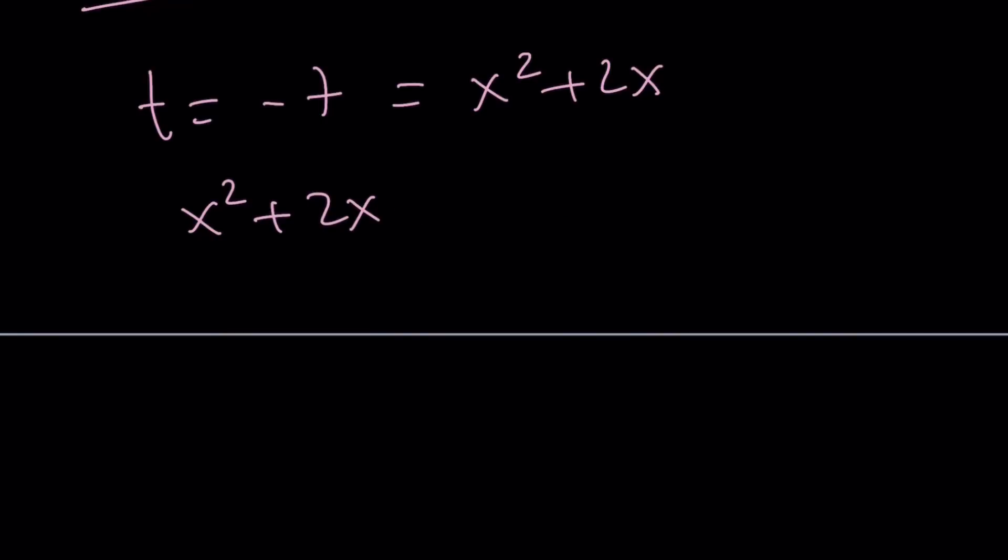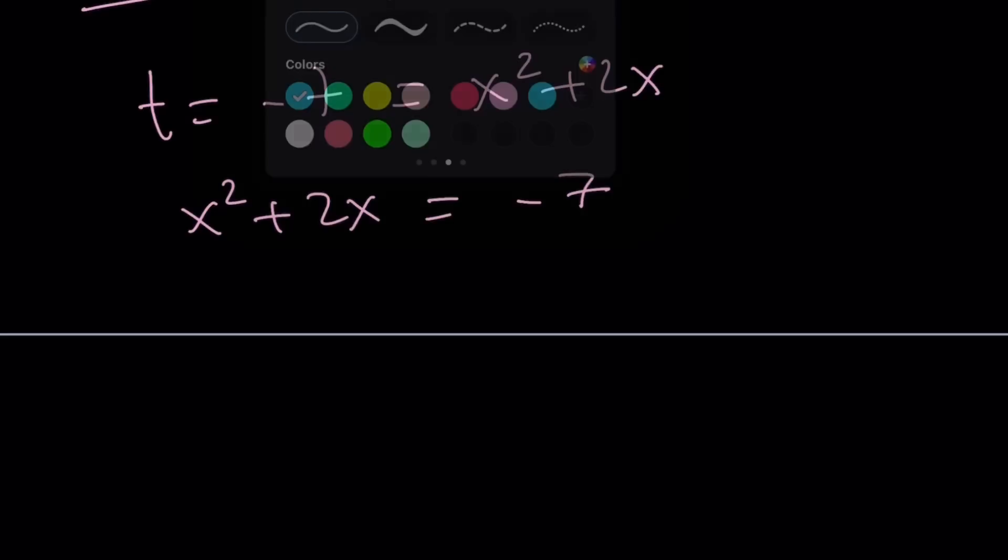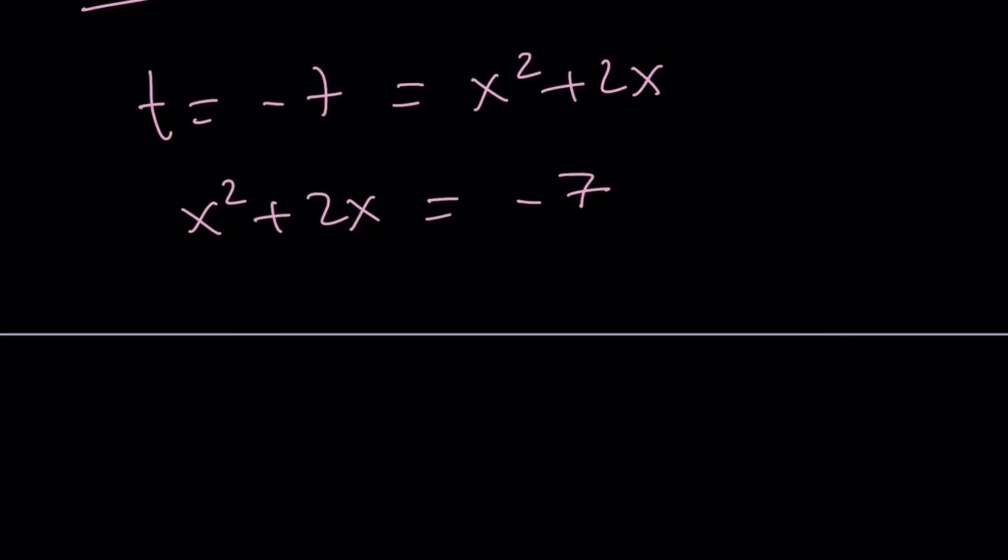Let me still write it the same way because I would like to use a different method for this one. You see, every time we can use a different method. And I want to use, what is it called? Completing the Square. Yes, that's what it is. Add one to both sides. The left-hand side becomes a perfect square. And that's perfect. And right-hand side becomes a negative number.